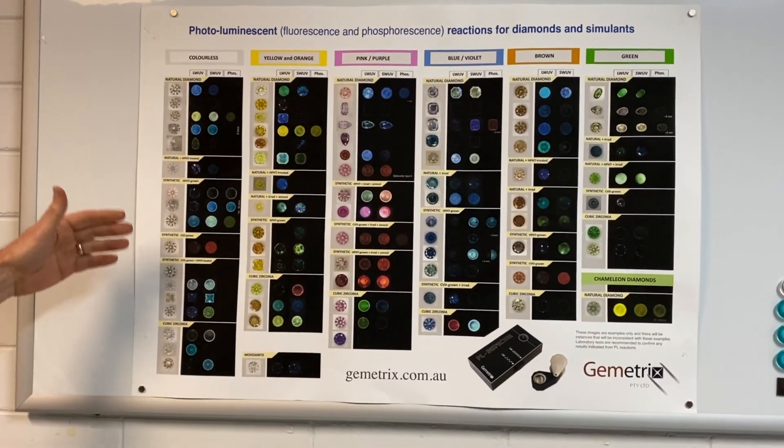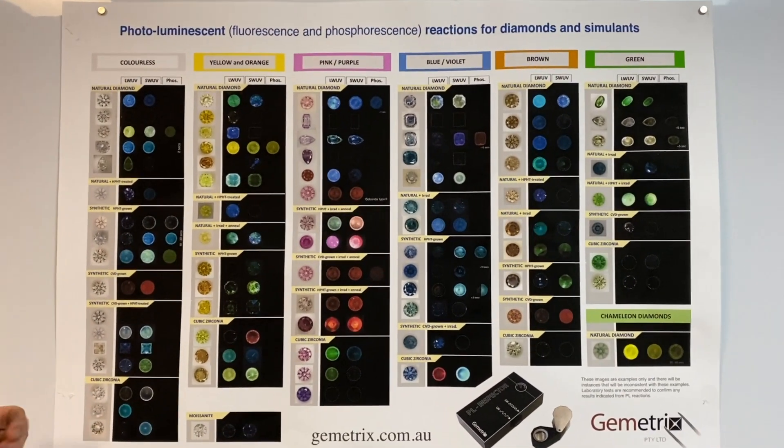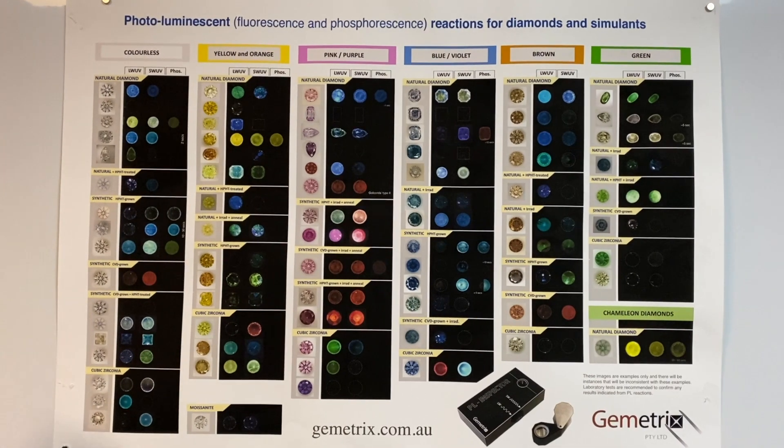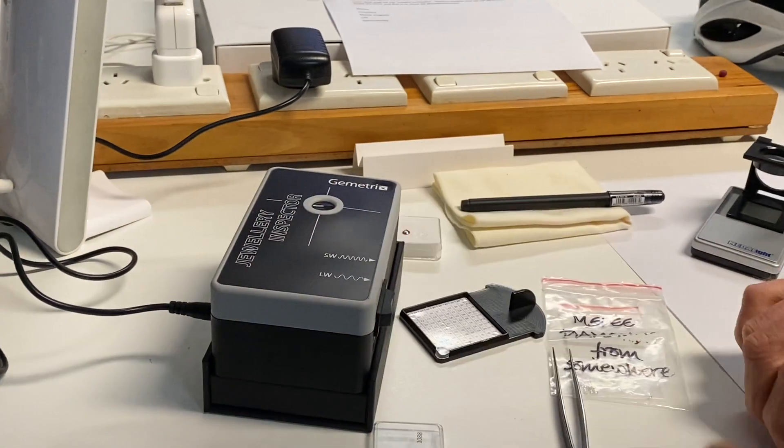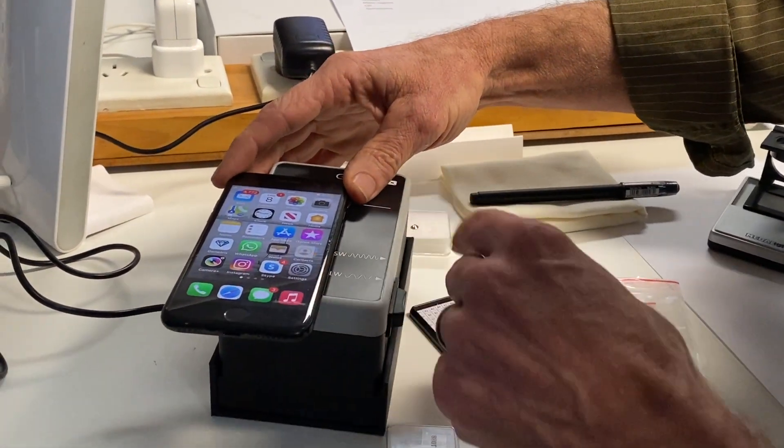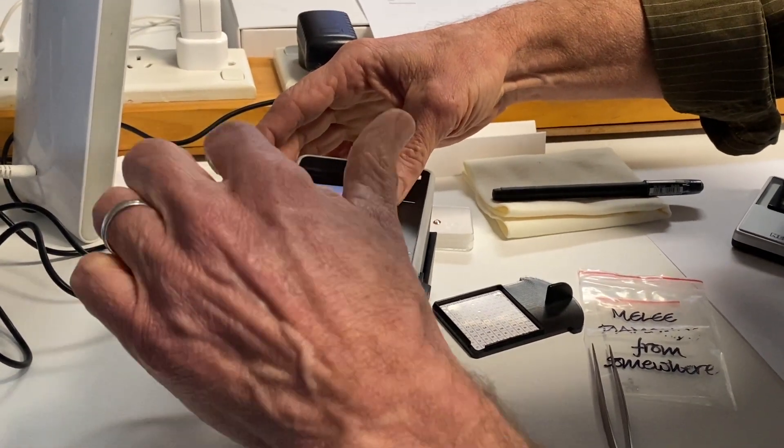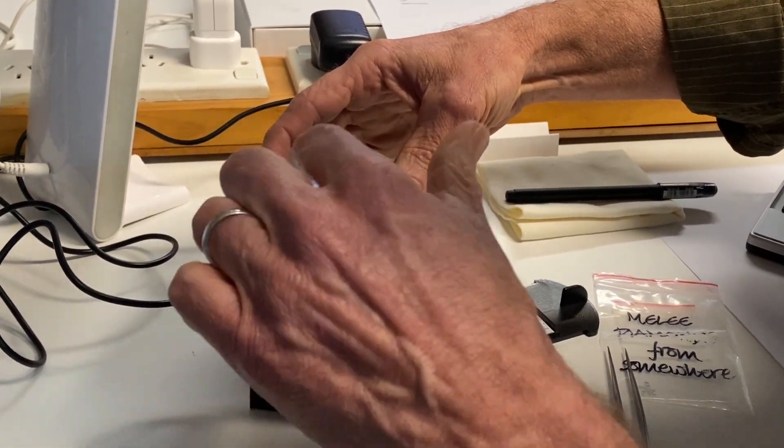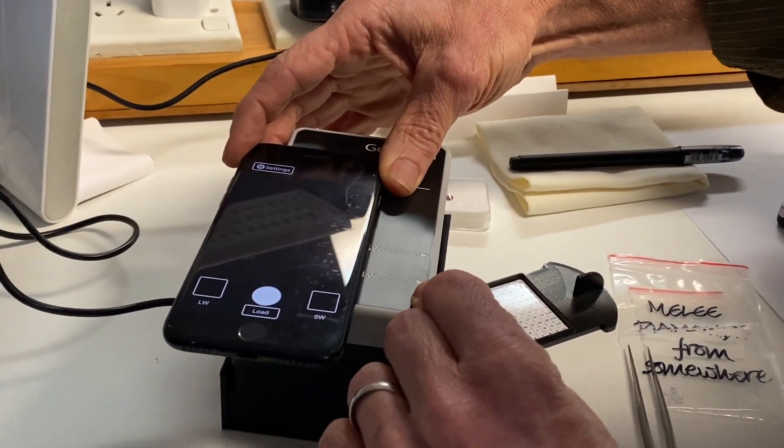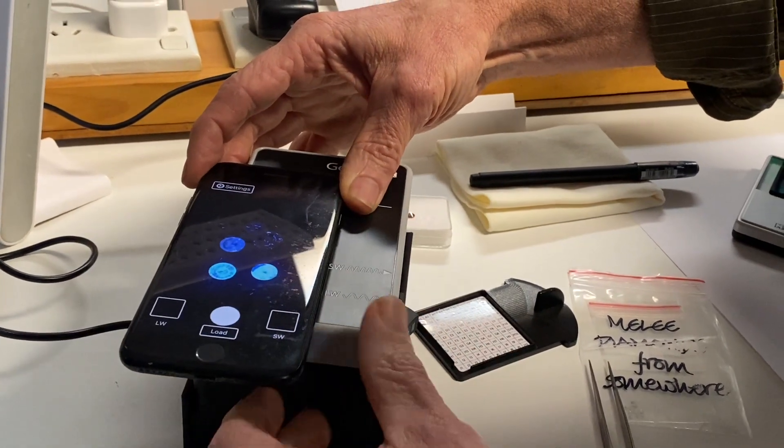This chart shows, and also depends whether they're synthetic, whether they're treated, or whether they're imitation, the CZ you referred to earlier. I'll use my phone so you can see what's happening inside under this, but normally you can look through the eyepiece. And there's an app here which helps in viewing what we're looking at.